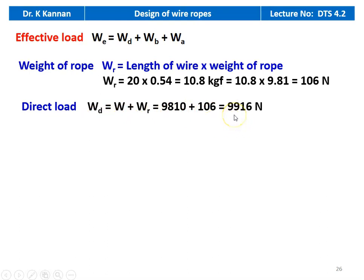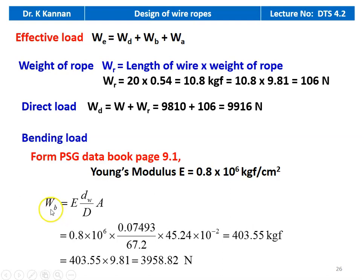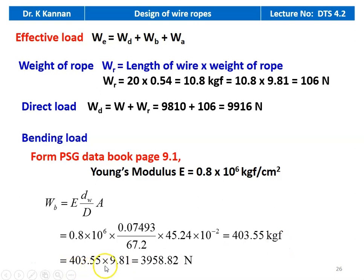We calculate the bending load: W_B equal to E into (diameter of the wire divided by diameter of the drum) into A, where A is the cross-sectional area of the rope. So 0.8 into 10^6 into 0.07493 divided by 67.2 into 45.24 into 10^-3 equal to 403.55 kilogram force, which is 403.55 into 9.81 equal to 3958.82 newton.